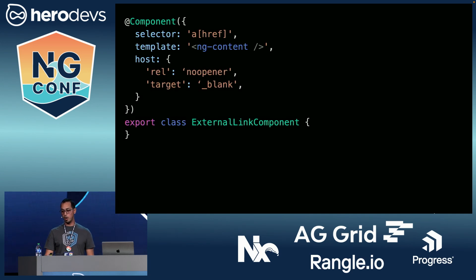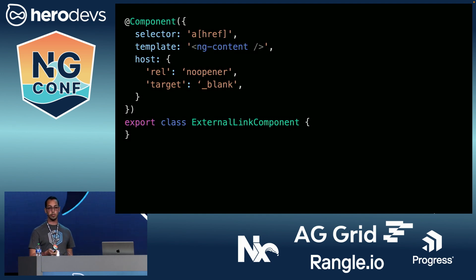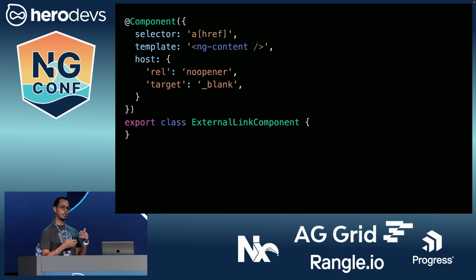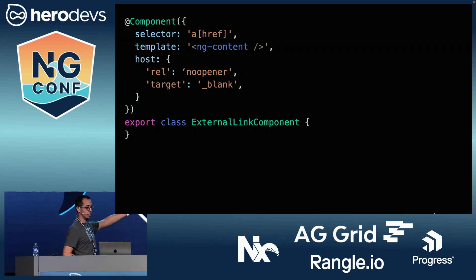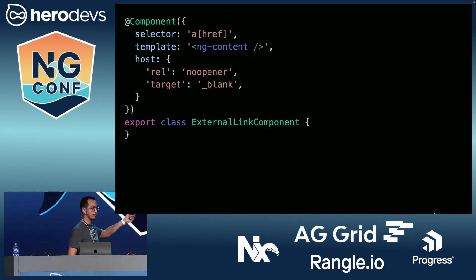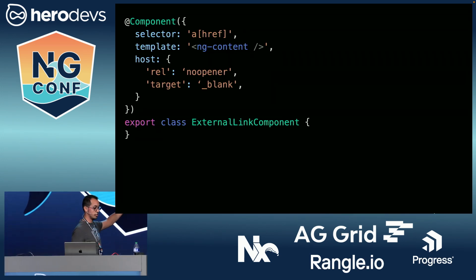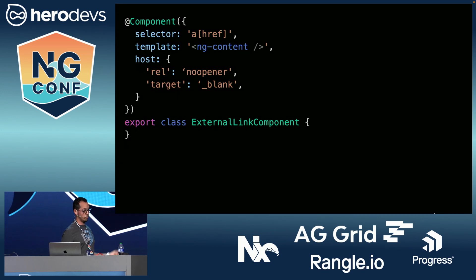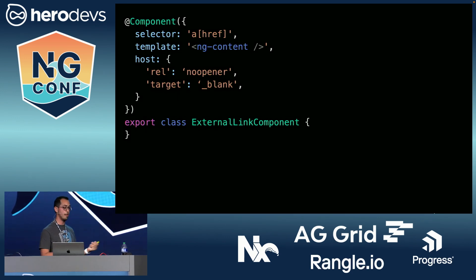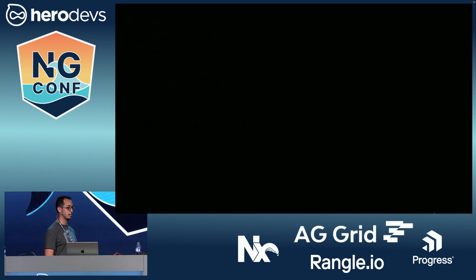You can also target existing attributes. In some cases you don't want to define your own custom attribute because you just want to augment the behavior of something native. Like making sure all external links are tagged with certain attributes — we can do that automatically without needing to add any extra properties, which may be desirable in some cases.